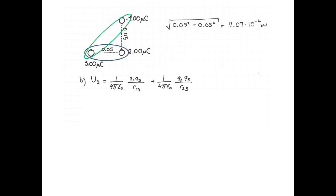Let's move on to part B. The potential energy of the 3 microcoulomb charge in this system is the potential energy of the two pairs in which it participates. So I've written down the potential energy of the two pairs right here.